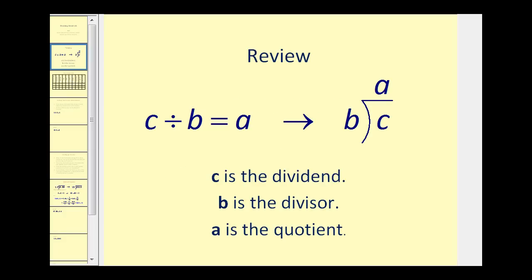Let's do a quick review on some vocabulary. If we have C divided by B equals A, in this form or long division form, C is our dividend, B is the divisor, and A is the quotient.